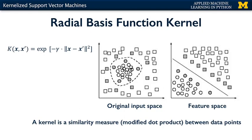The kernel function in an SVM tells us, given two points in the original input space, what is their similarity in the new feature space? For the radial basis function kernel, the similarity between two points in the transformed feature space is an exponentially decaying function of the distance between the vectors in the original input space, as shown by the formula here.